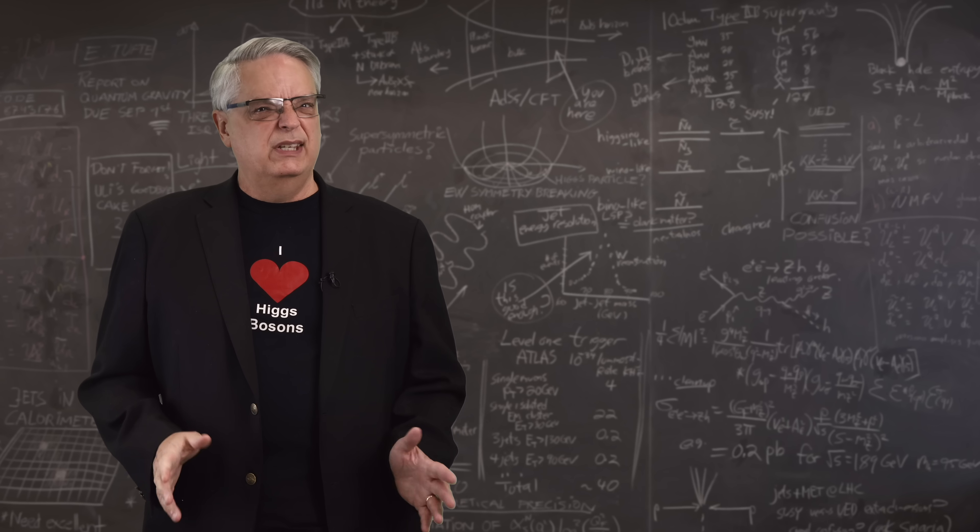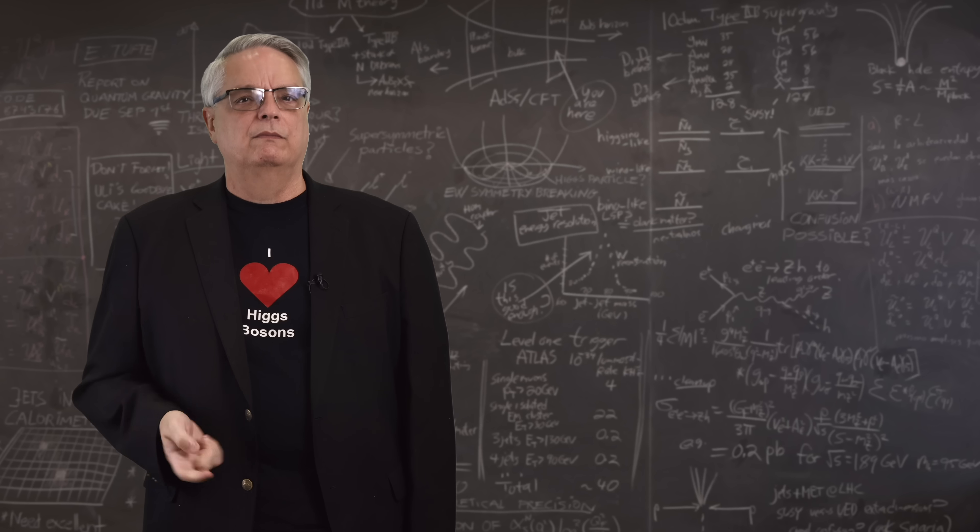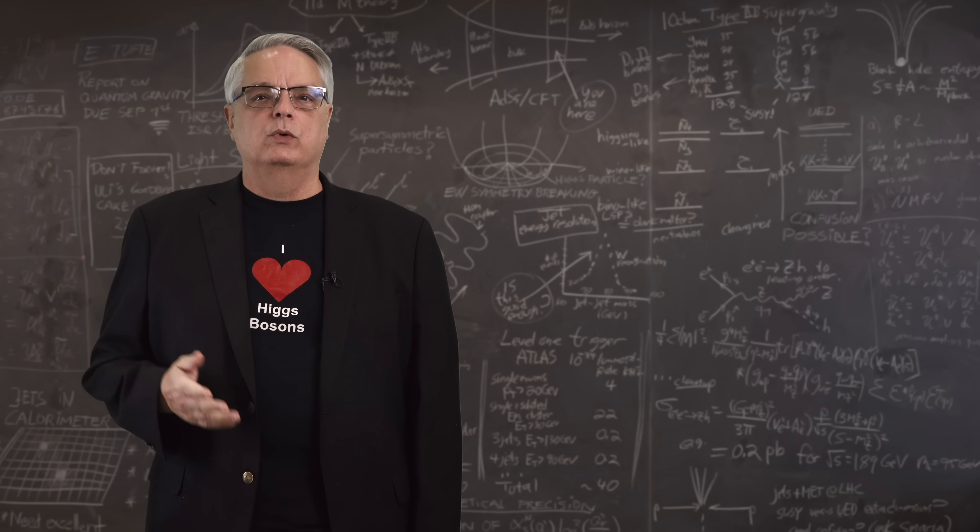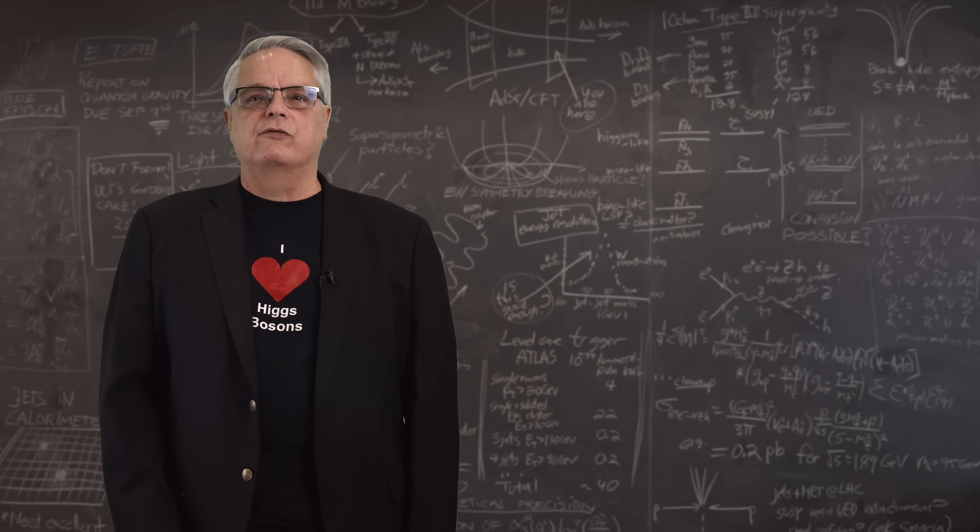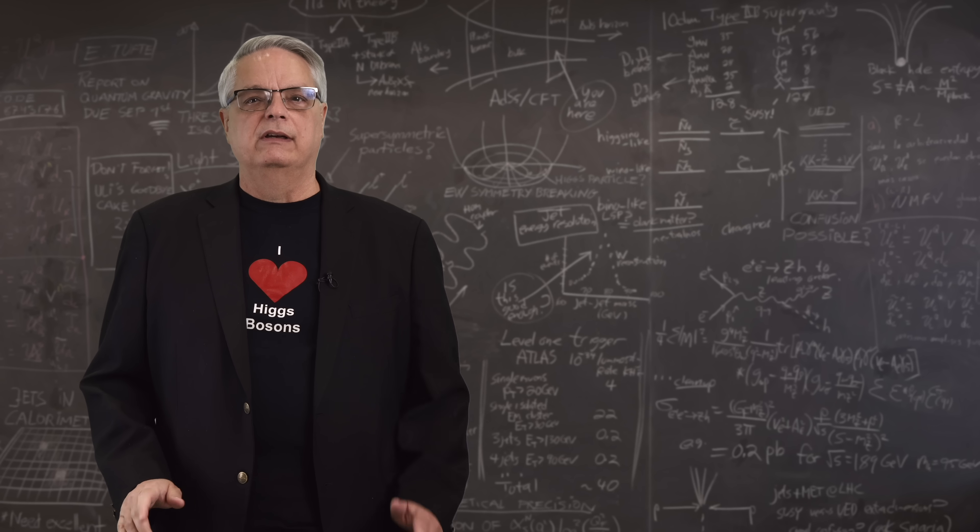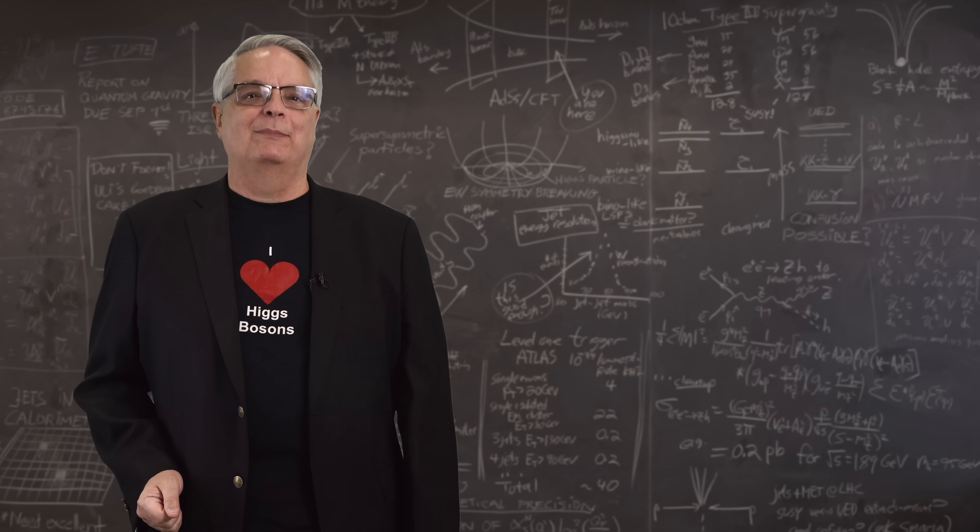The second is when a theory predicts some particular phenomena, which is eventually validated by experiments. One such example was the observation of the Higgs boson in 2012. That discovery occurred nearly half a century after the particle was predicted. Let's take a look at just how that happened.